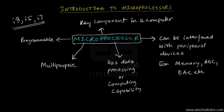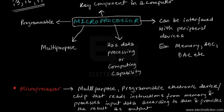There are other manufacturers that develop several types of microprocessors involving different types of architectures as well. By the book, a microprocessor is defined as a multi-purpose programmable electronic device or chip that basically reads instructions stored in memory and then processes input data according to those instructions.